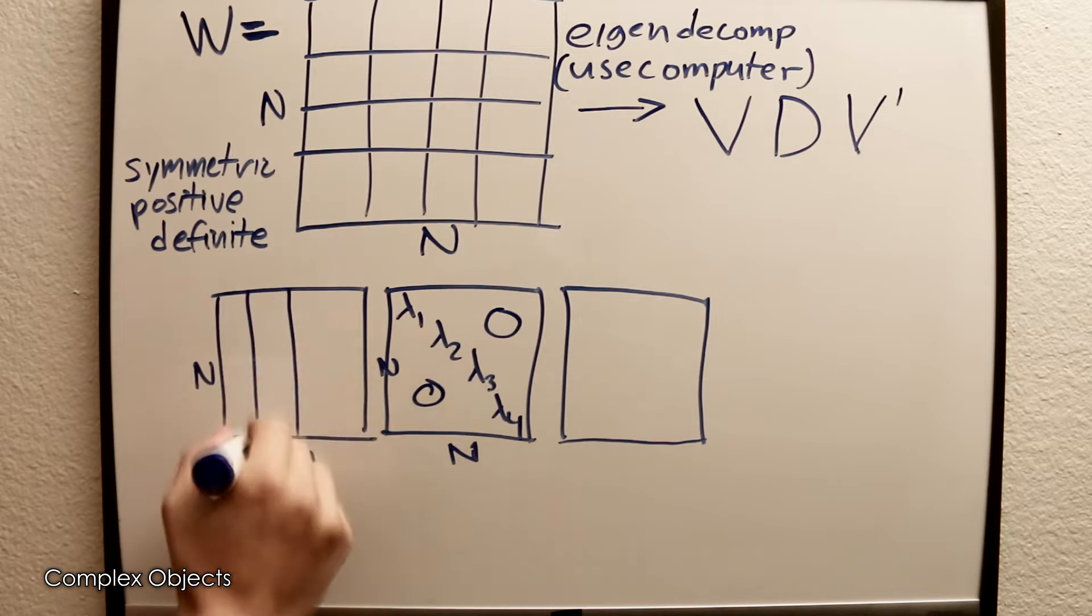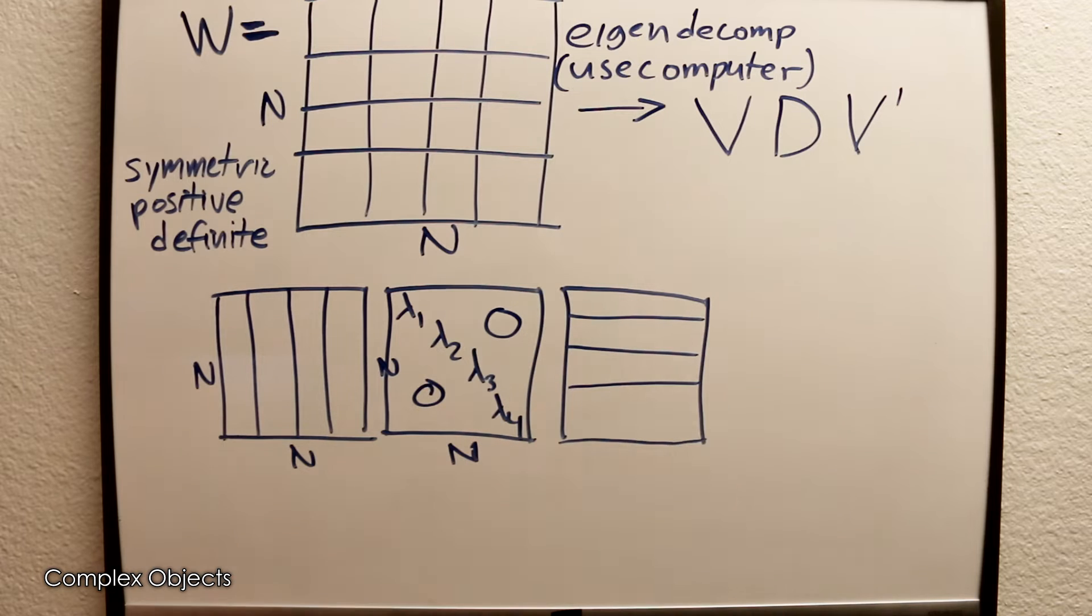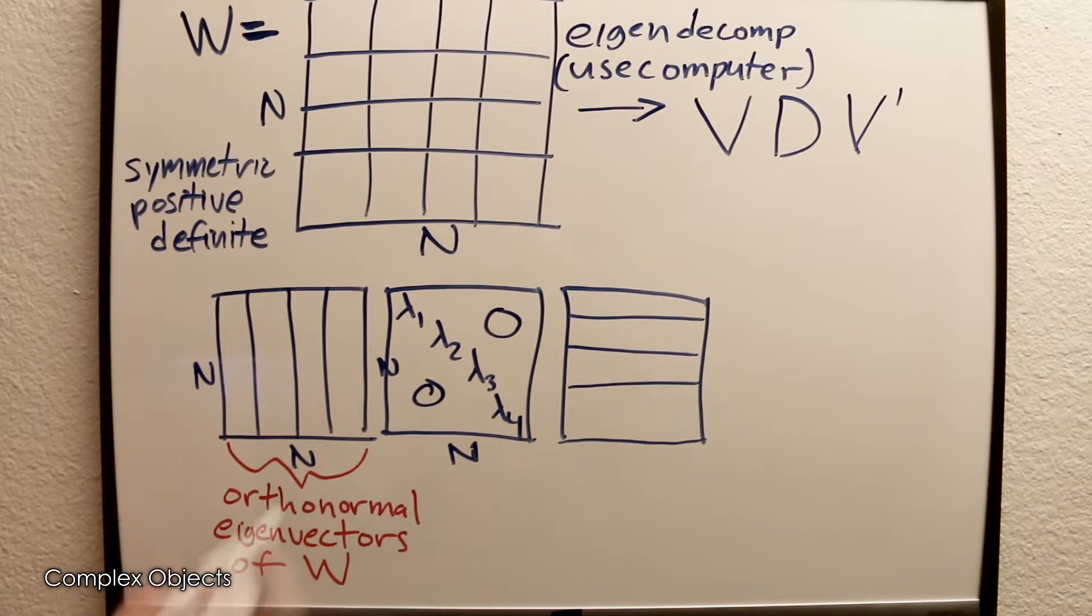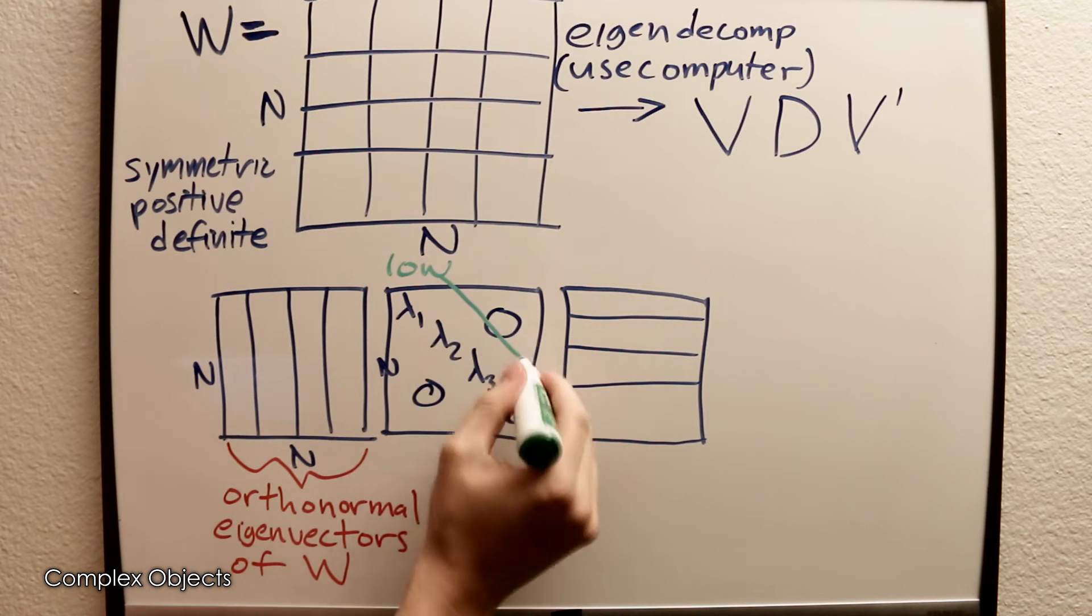From linear algebra, because the similarity matrix is symmetric and positive definite, V will be a matrix where the columns are mutually orthogonal eigenvectors of the similarity matrix. The eigenvalues are stored along the diagonal of D with zeros everywhere else, and those eigenvalues are guaranteed to be real.